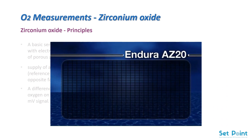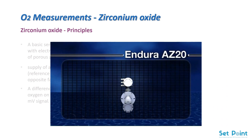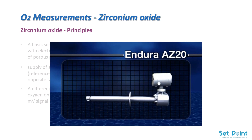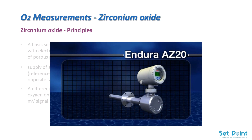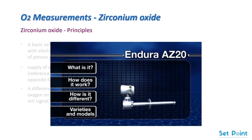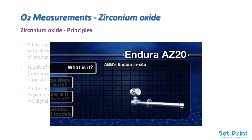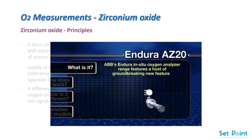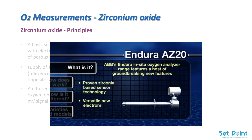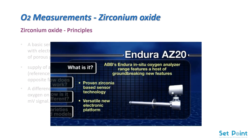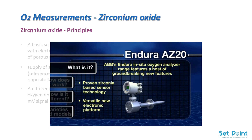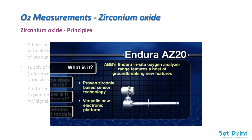Let's now look in more detail at the Endura in-situ oxygen analyzer range from ABB. Featuring a host of groundbreaking new features, the Endura AZ-20 combines ABB's proven zirconia-based sensor technology with a versatile new electronic platform, truly making it the product of choice for a broad array of combustion applications.